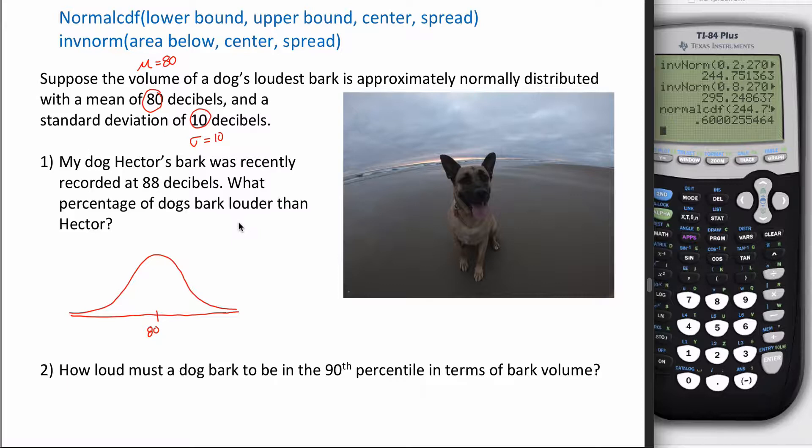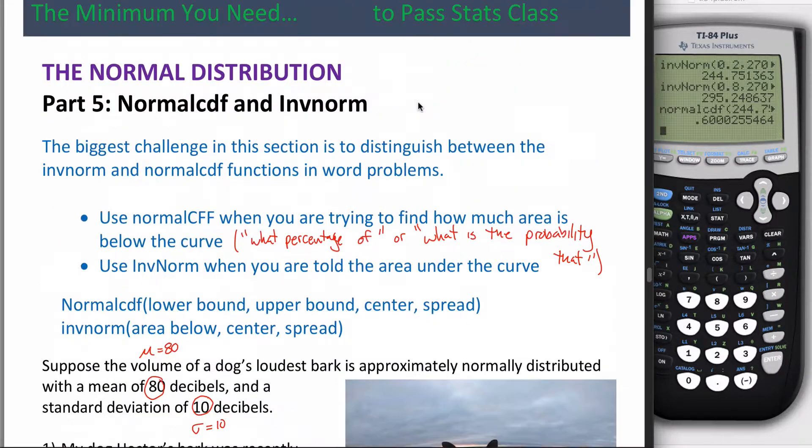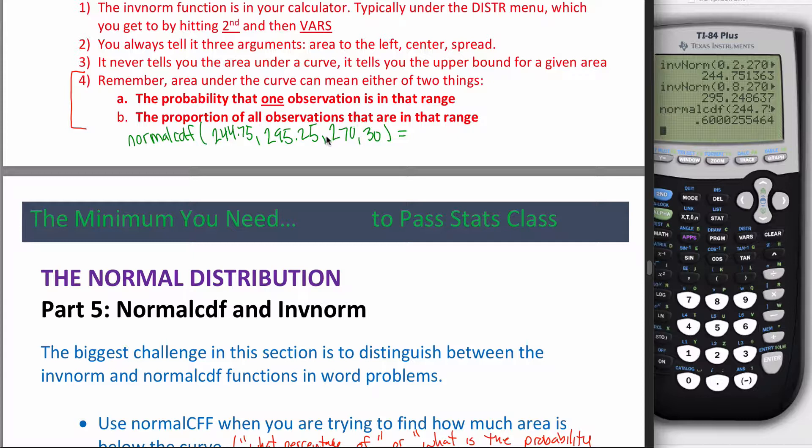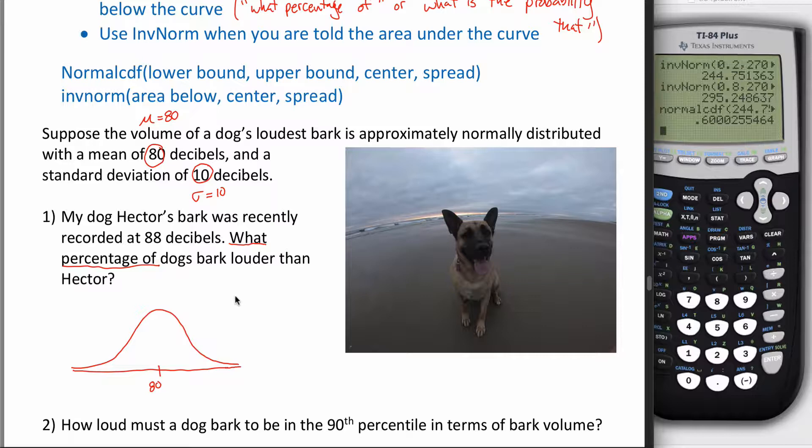Hint: when they are asking you for an area, the phrase 'what percentage of' or 'what is the probability that' is commonly used. You're often going to use normalCDF when you hear 'what percentage of' or 'what is the probability that.' Those are the two key phrases because those are the two interpretations of the area under the curve.